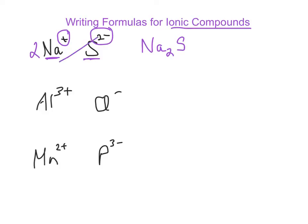The other way to do this is this switching thing. You just crisscross them, and this 1, you bring it down here, and this 2, you bring it down there. And you end up with Na2S1 or Na2S.